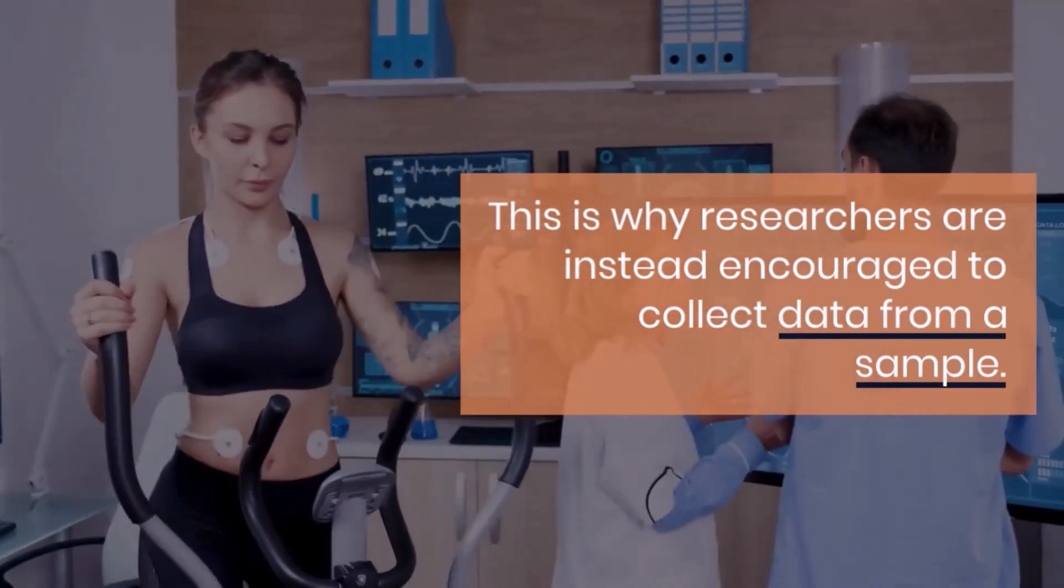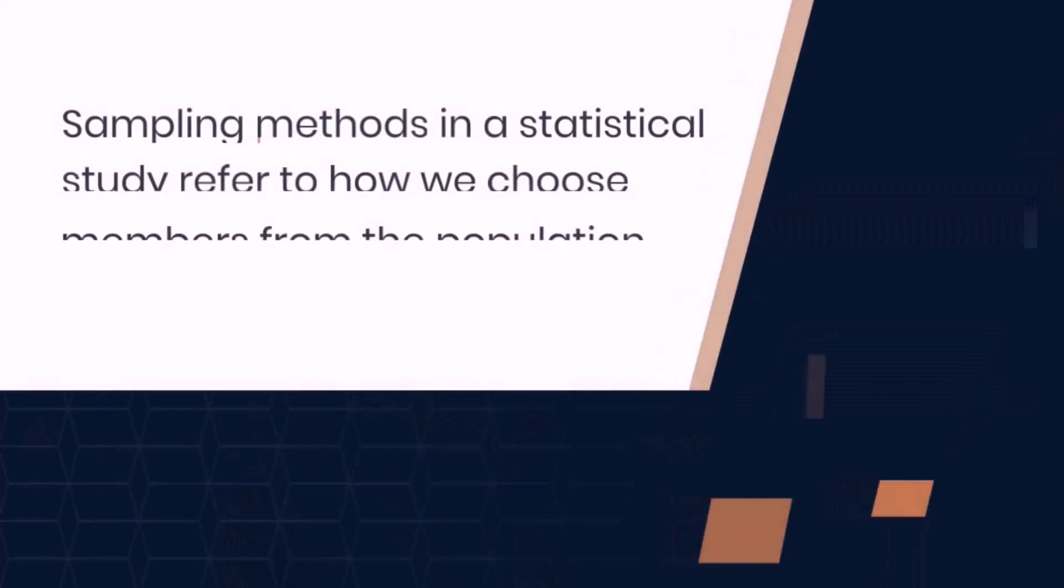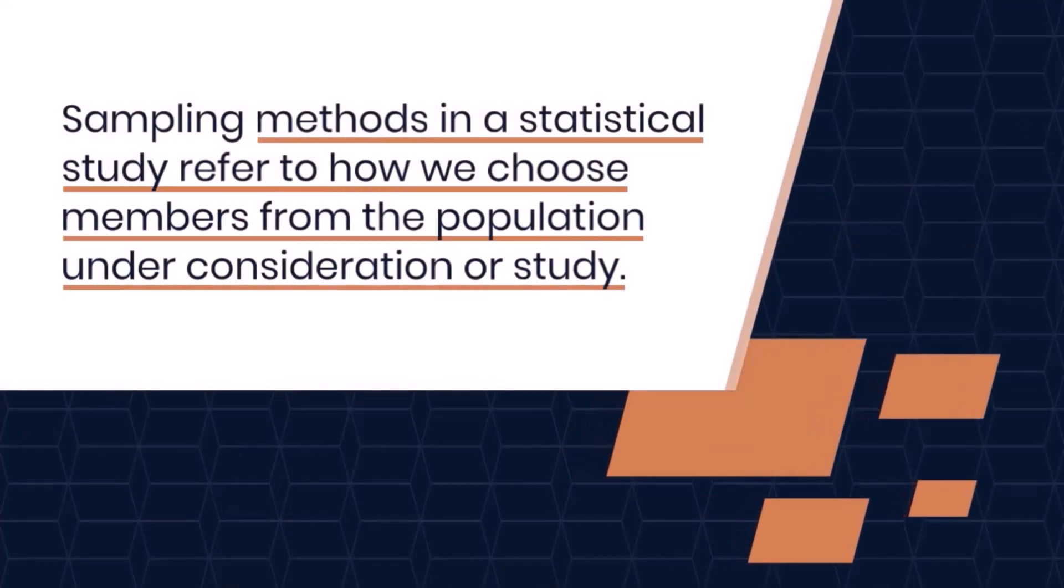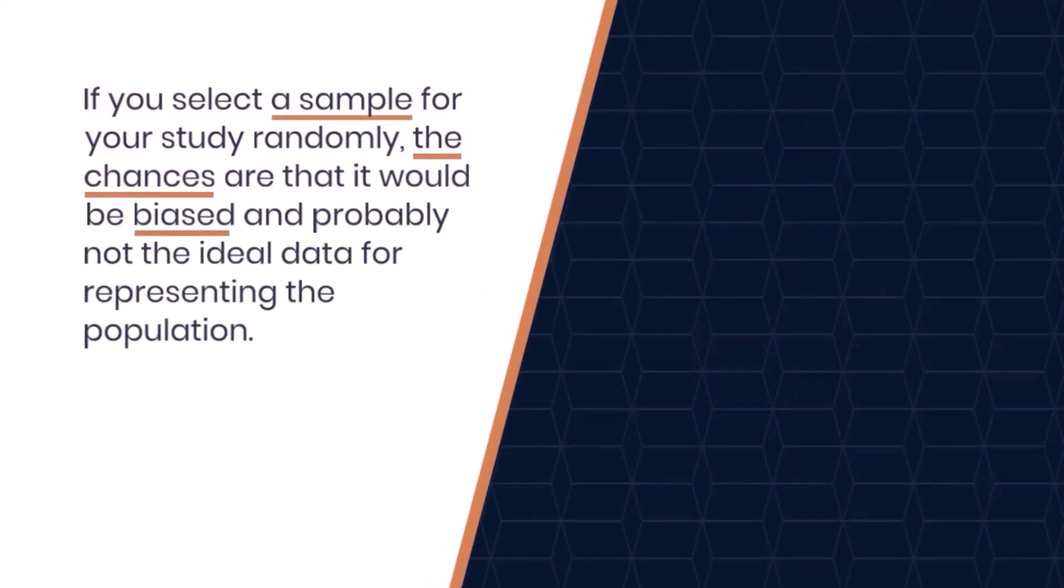Sampling methods in a statistical study refer to how we choose members from the population under consideration or study. If you select a sample for your study randomly, the chances are that it would be biased and probably not the ideal data for representing the population. This means there are reliable and non-reliable ways to select a sample.